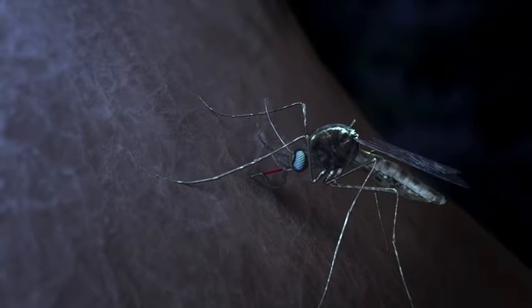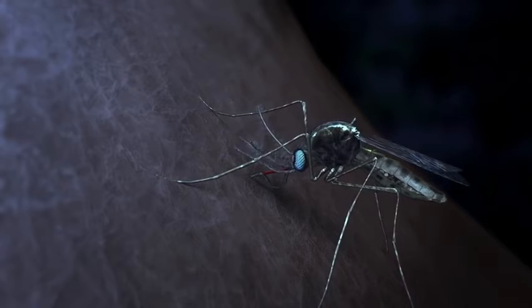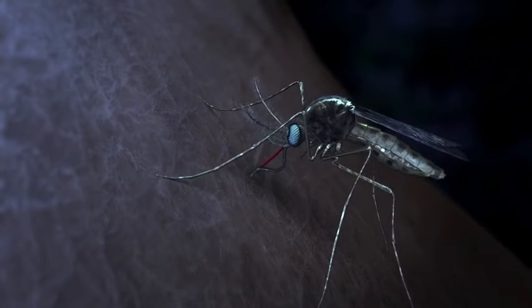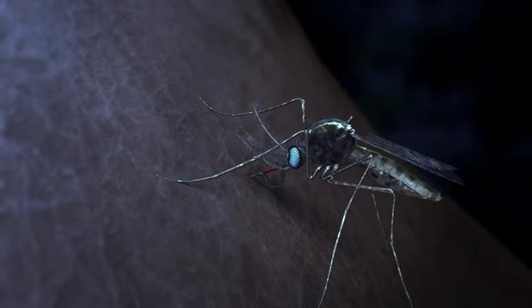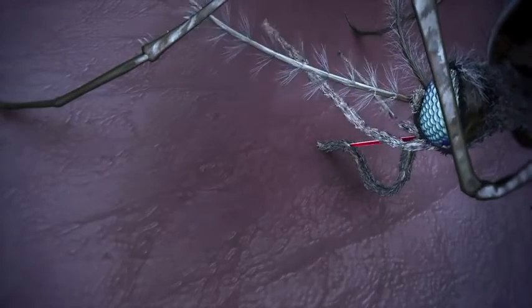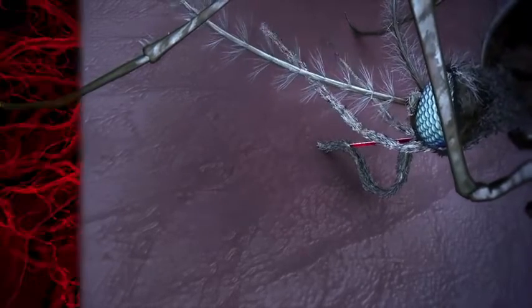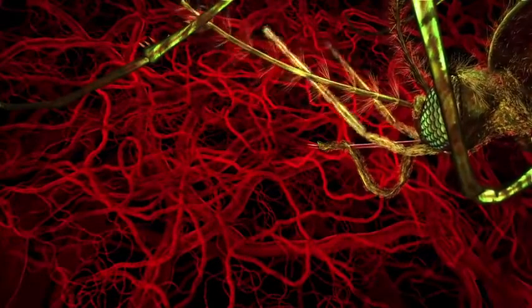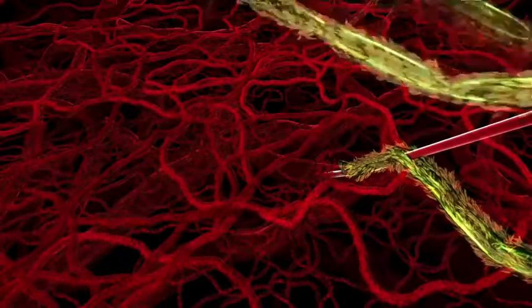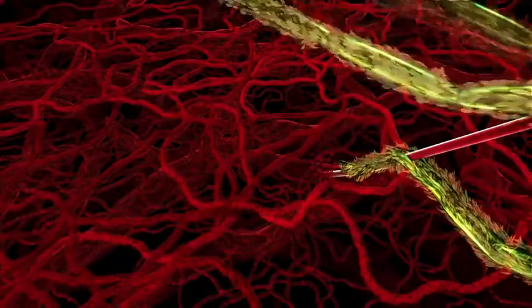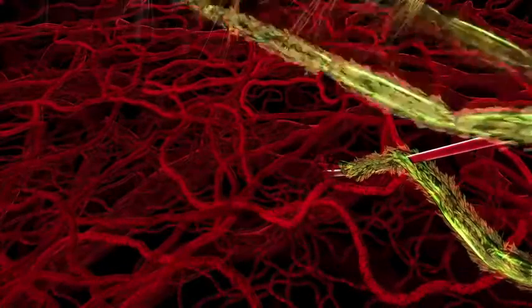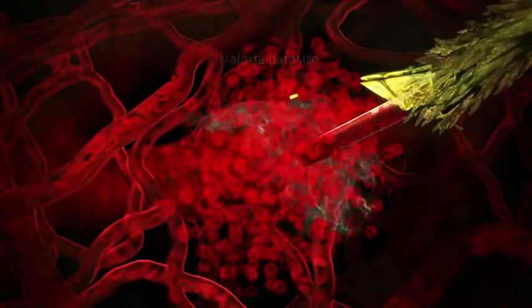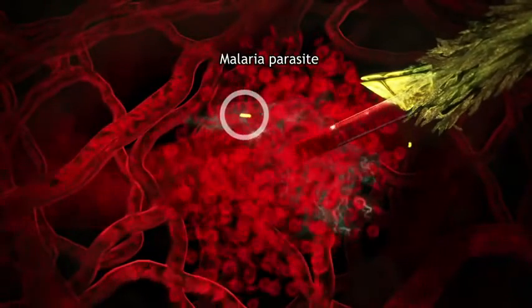This mosquito is infected with the malaria parasite. Because she is pregnant, she has become hungry for human blood. During the bite, she injects saliva to stop the blood from clotting. Her infected saliva also carries the malaria parasite.